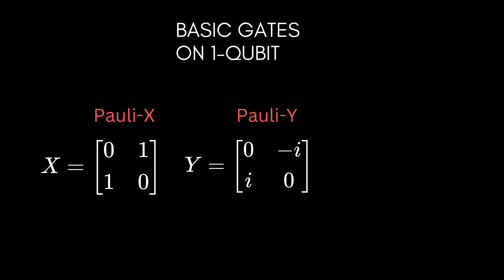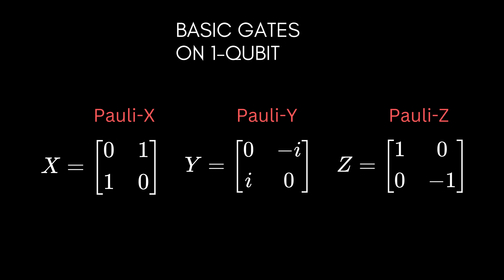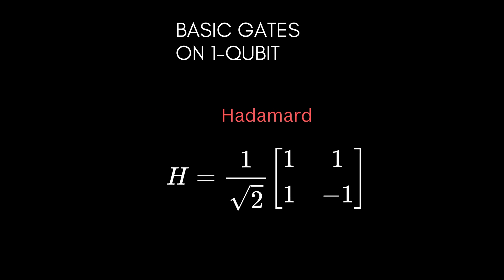Similar to classical logic gates, we can build complex circuits based on just a few gates. Here, we can do the same and build more complex quantum circuits based on just a few basic single-qubit gates. The first gate is the Pauli-X gate — these gates operate on one qubit, so they are 2×2 complex matrices. Another one is the Pauli-Y matrix with entries [0, -i; i, 0], where i is the square root of -1. And the Pauli-Z matrix is [1, 0; 0, -1]. But the most important one is the Hadamard gate, which is (1/√2)*[1, 1; 1, -1], and it plays an important role in quantum computation.